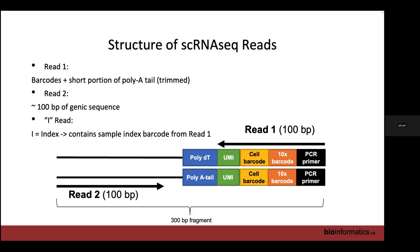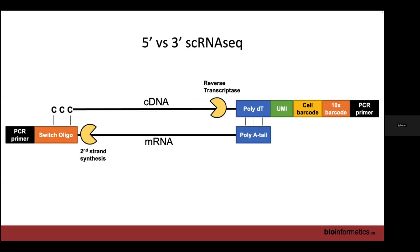We also get an i-read, which contains our sample index — our sample barcode. It's actually completely superfluous; you only need read one and read two. That was for three-prime single-cell RNA-seq. For five-prime, we do the exact same thing, only all our barcodes are instead attached to our switch oligonucleotide.